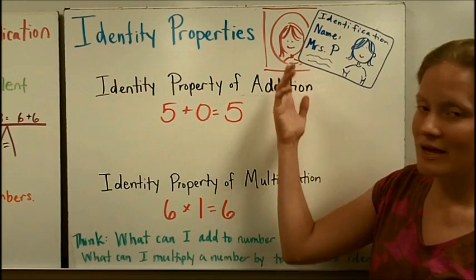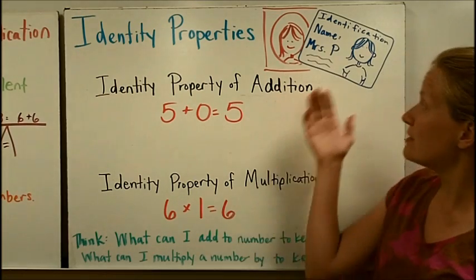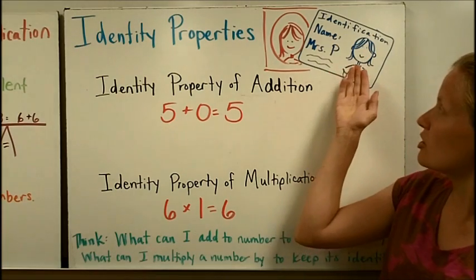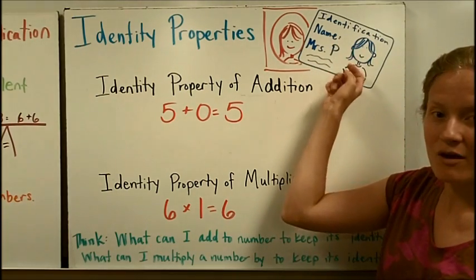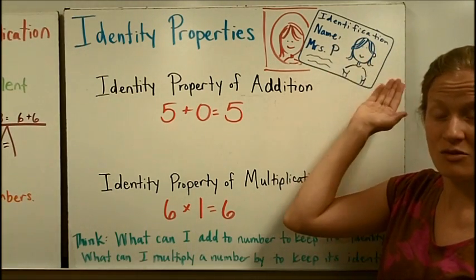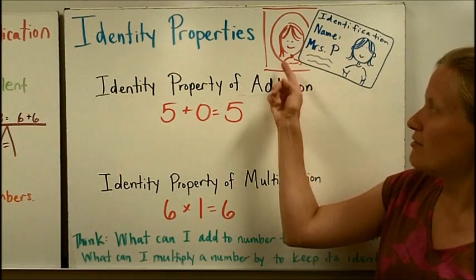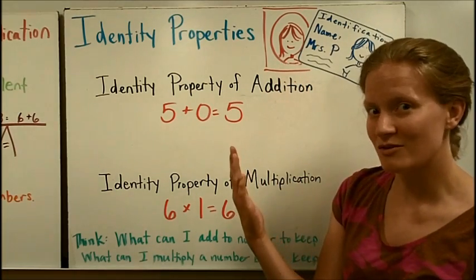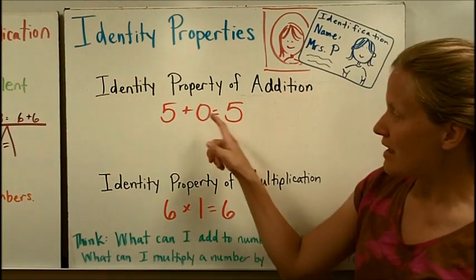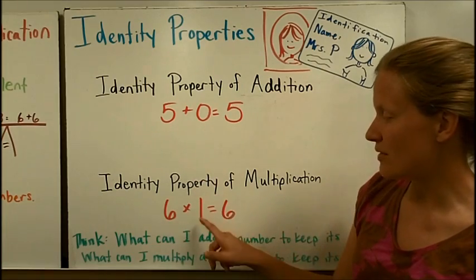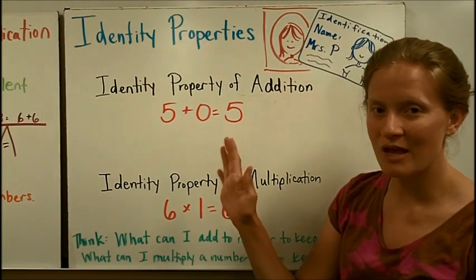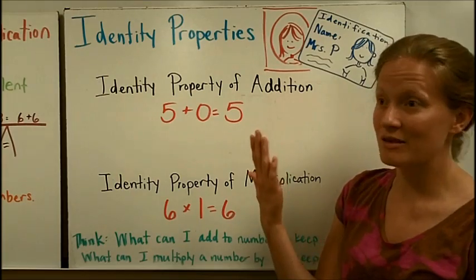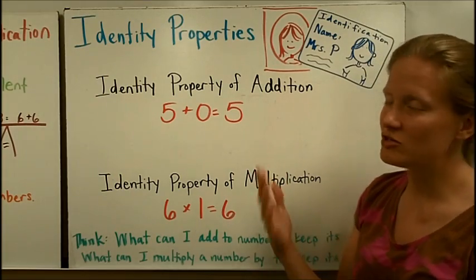When we talk about the identity property, you might think about it two ways. Someone's ID card — their identification card — tells exactly who they are, and this is what doesn't change at all. The other thing you might think about is looking in a mirror to see yourself. The 0 in addition and the 1 in multiplication is sort of like a mirror for the number — when you look back, the number sees an image of itself.